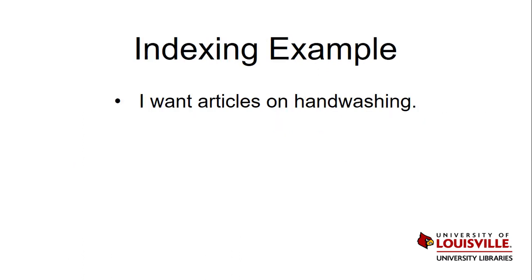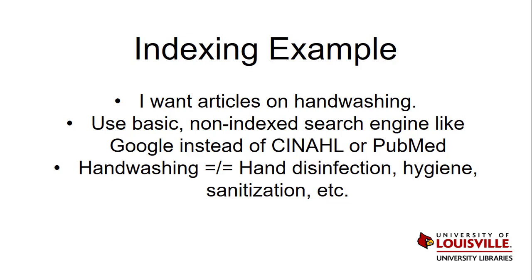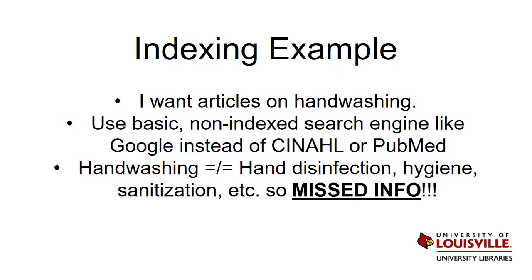Let me give you an example to show you how important indexing is. Let's say I want articles focused on handwashing, so I use Google or another basic non-indexed search engine to search for the term handwashing. Because the search engine is not indexed, I would miss out on articles that don't use the word handwashing, but might use words like hand hygiene, hand disinfection, or hand sanitization in the titles and abstracts. This could exclude massive amounts of information, including comprehensive practice guidelines or systematic reviews and meta-analyses that cover the broad topic of hand hygiene but also include important sections on handwashing. As a result, I'd run the risk of missing out on a lot of useful information, and I'd also be worried that the results I got wouldn't be as reliable.